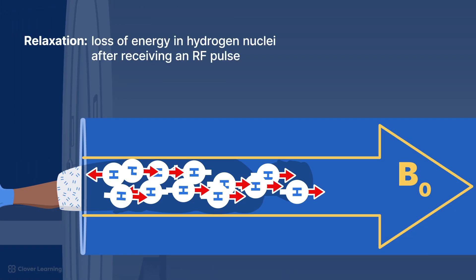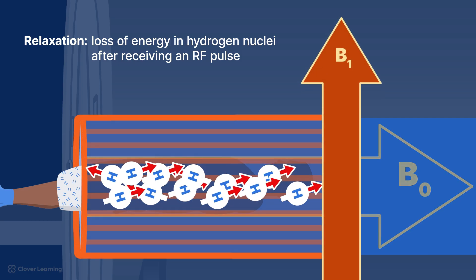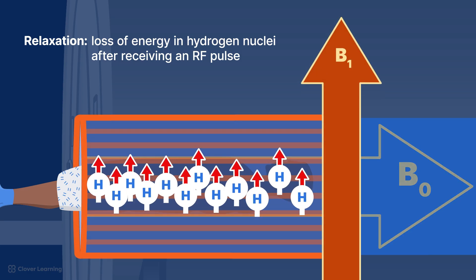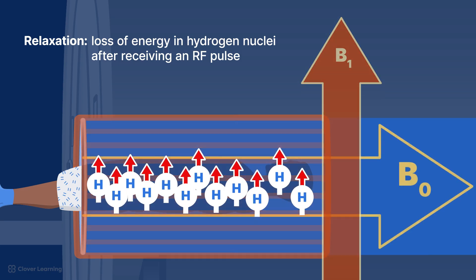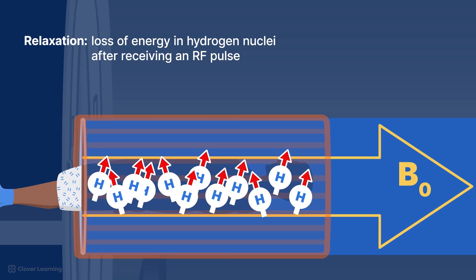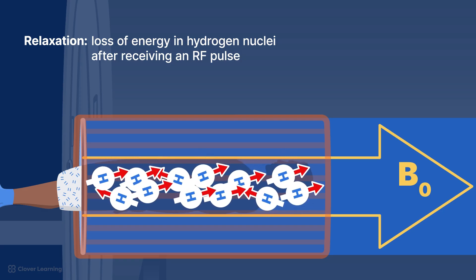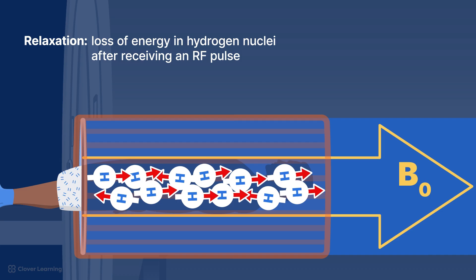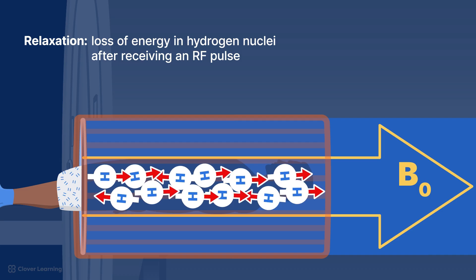In summary, relaxation is a fundamental principle of MRI imaging. Relaxation refers to the loss of energy in hydrogen nuclei after receiving an RF pulse and consists of spin-lattice or T1 recovery and spin-spin or T2 decay relaxation processes, which happen simultaneously but independently of one another.